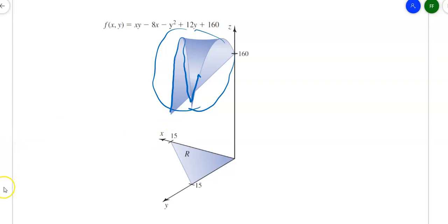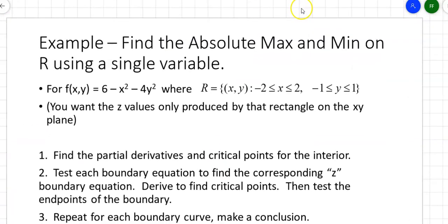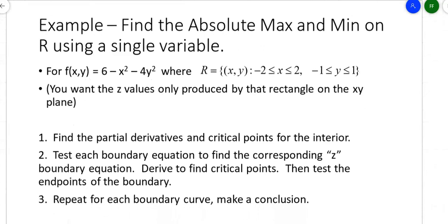There are two ways to do this. One way is to set up parameters; the other way is to stick with x's and y's. This is the first example, the first method: find the absolute max and mins on some region using a single variable. Here's f(x,y) = 6 − x² − 4y², so it opens downward. My region is a rectangle going from −2 to 2 on the x's and −1 to 1 on the y's. So I'm looking for the surface above this rectangle on my base.